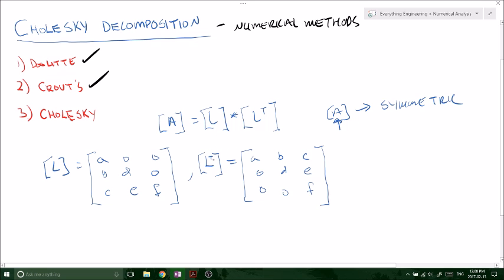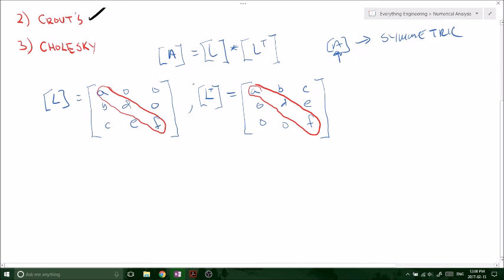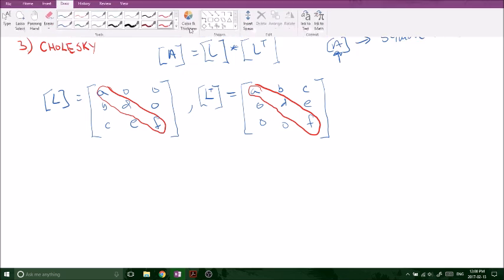Basically if you remember from the previous methods like Crout and Doolittle, we had ones on the diagonal for either the upper or the lower depending on what method we use. But in this Cholesky factorization we've got values for both. So that's the main difference here. We still have the product of L and L^T to equal our matrix A, but now we've got diagonals in both matrices not equal to one.